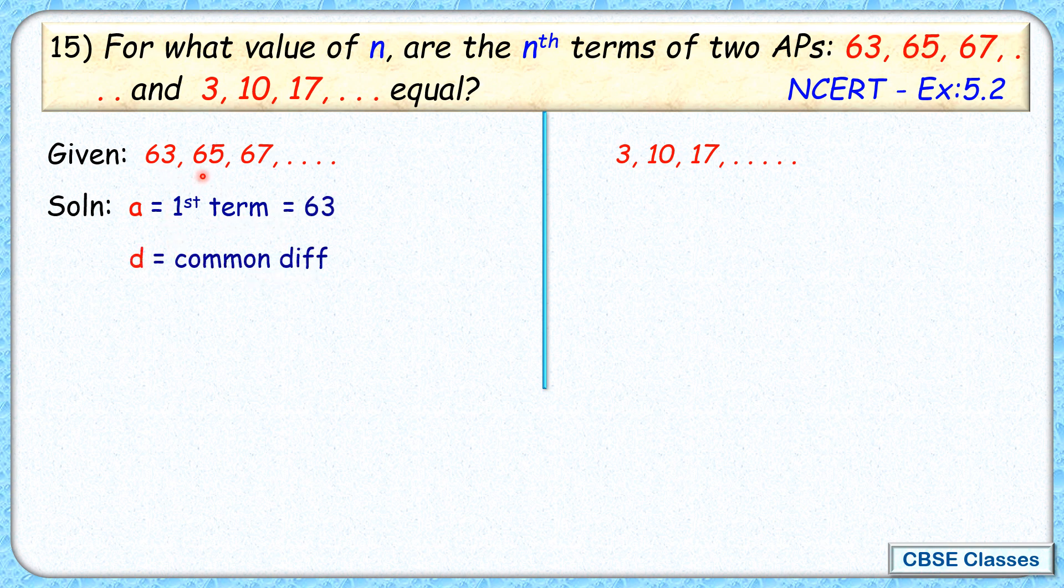The nth term formula is Tn = a + (n-1)d. Putting a as 63 and d as 2, the nth term is 63 + (n-1)×2. Opening the bracket, it will be 63 + 2n - 2. Simplifying, the nth term for the first AP is 61 + 2n.